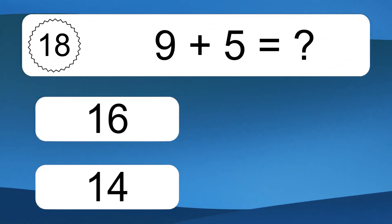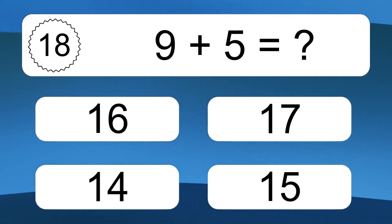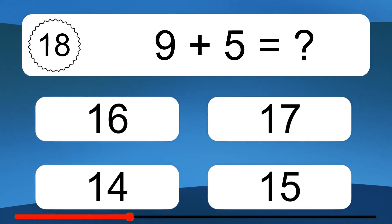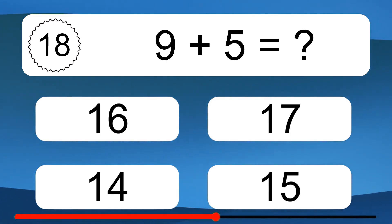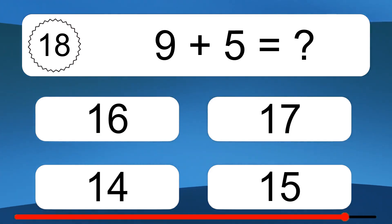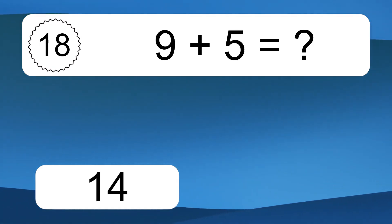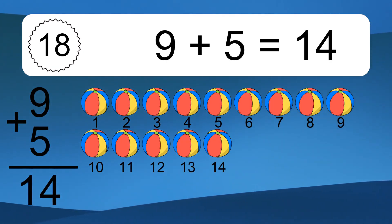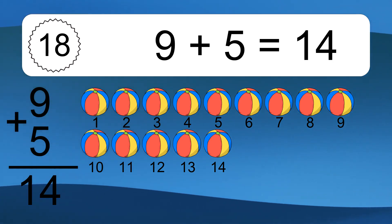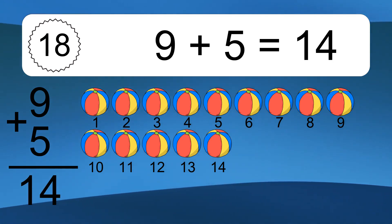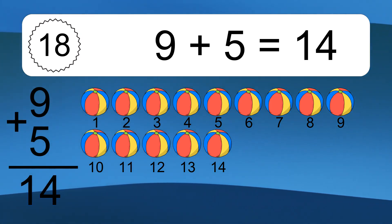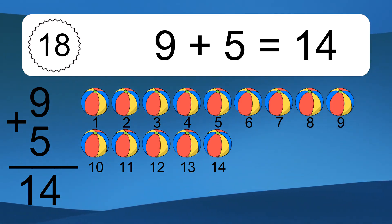9 plus 5 equals what? 9 plus 5 equals 14. Let's count it: 1, 2, 3, 4, 5, 6, 7, 8, 9, 10, 11, 12, 13, 14.